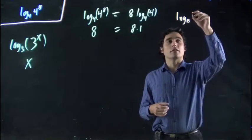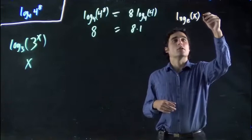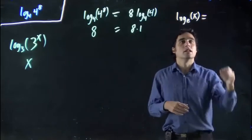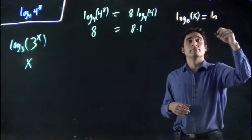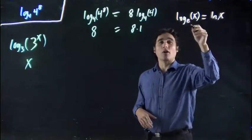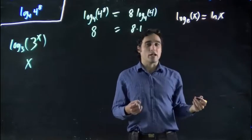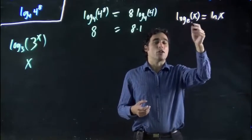In fact, it shows up often enough. And I'll write it as log to the base e of x, just to make it more proper. This is the same as writing ln. Ln of x. This is just a shorthand. This shows up often enough that we have given it its special own way of writing it. Ln is the same as log to the base e.